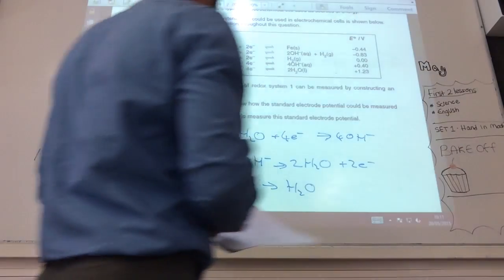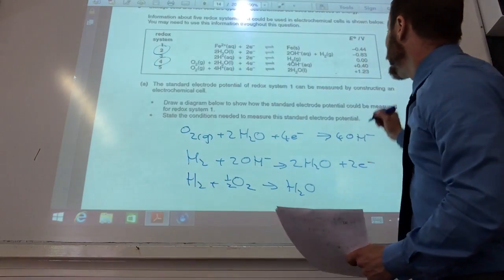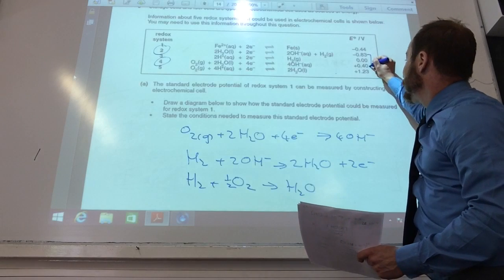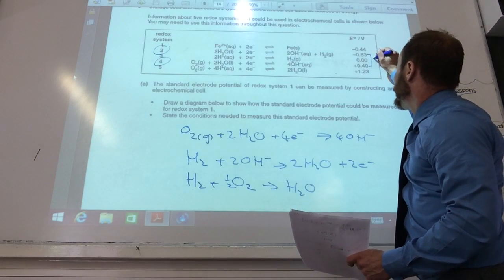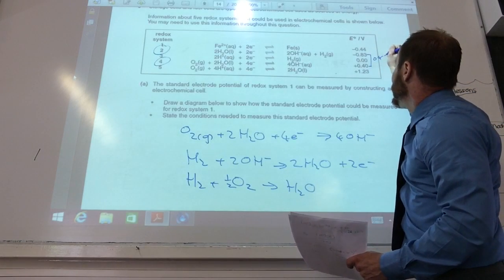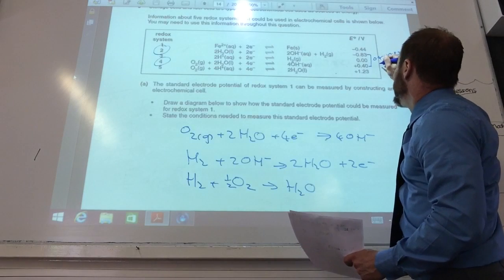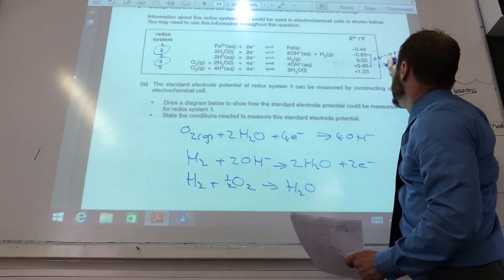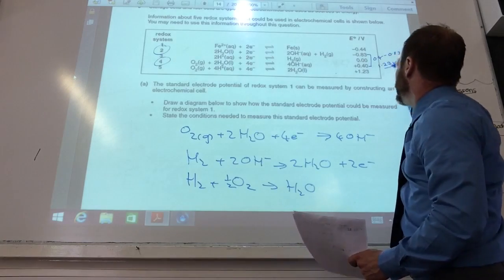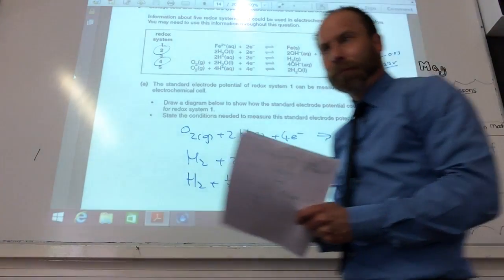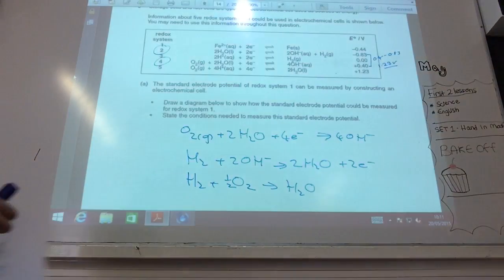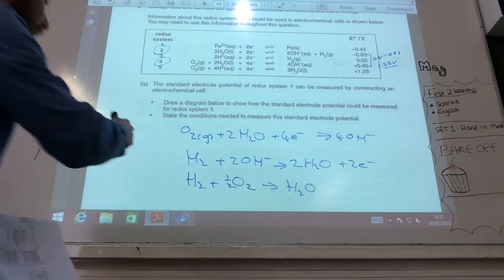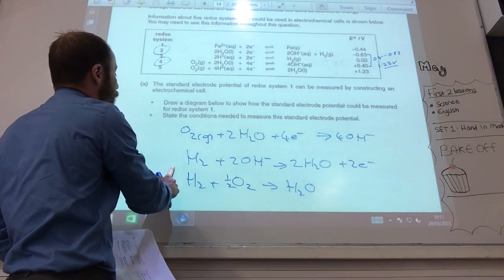The potential that you'll get is the difference between that one and that one. So it's 0.4 minus minus 0.83, which gives you it as being 1.23 volts. I'm still not quite sure what you've done with A. Like, how did you put them together? Oh, well, these two.